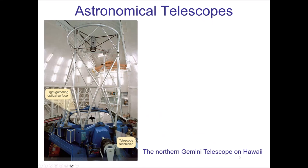Welcome to the video lecture for chapter six on telescopes. In the previous chapter, we talked a lot about the properties of light and how light and matter interact. This chapter is a continuation of that. Now that we know how light is emitted, we need to understand how, as humans, we collect this light, analyze it, and learn things about stars and galaxies from this light. This is all done through telescopes.